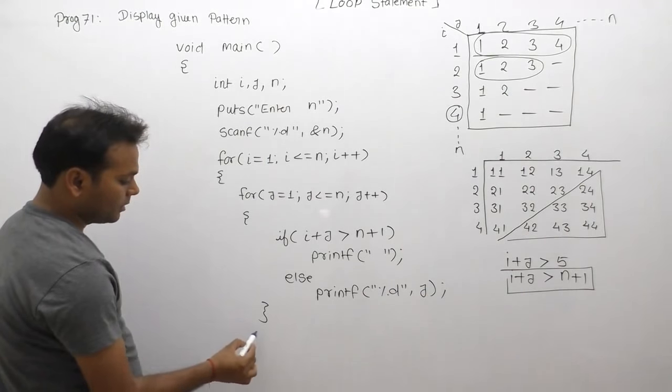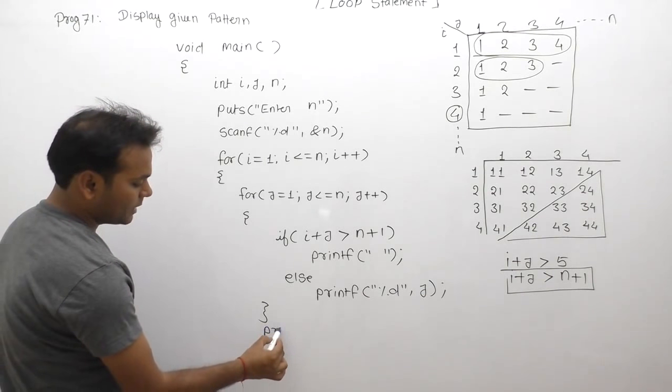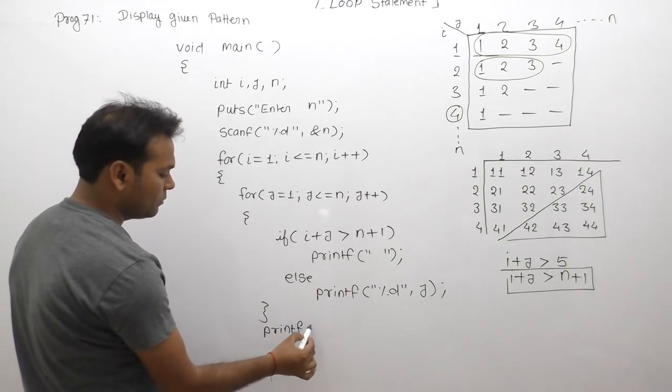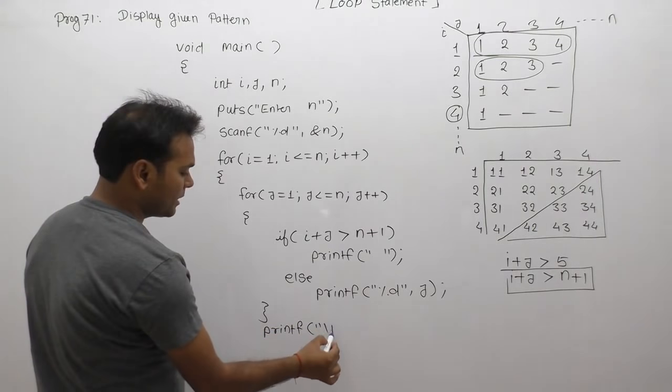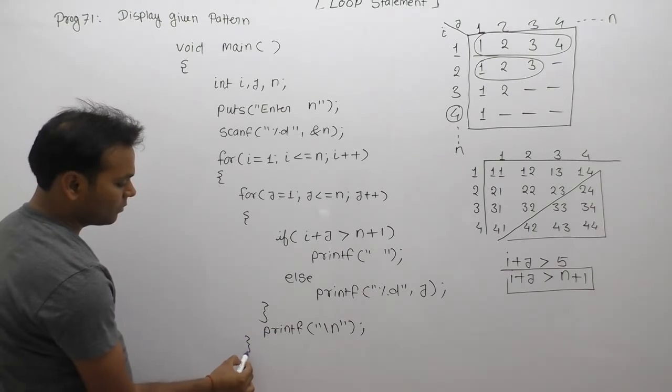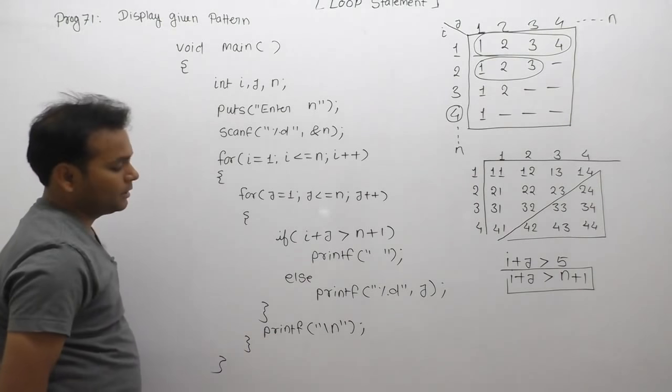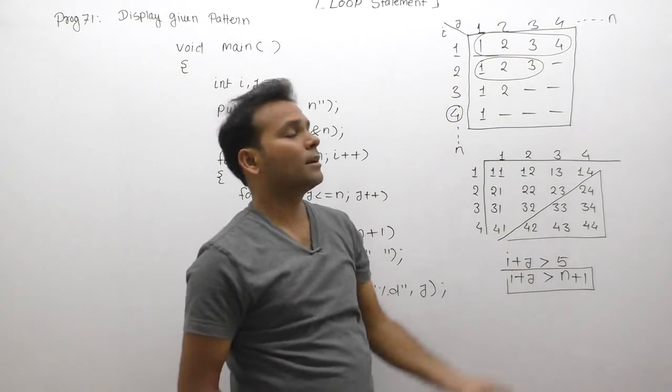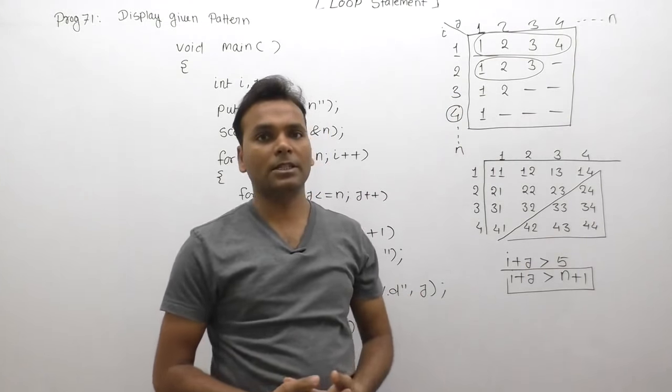After closing the outer loop, to change or separate the row, we display a new line using slash n. Then close the outer loop and close the main function. Based on these given conditions, we can display any range in the given shape or style.